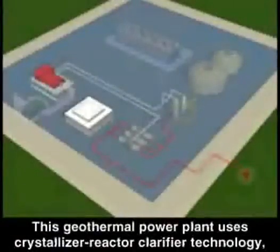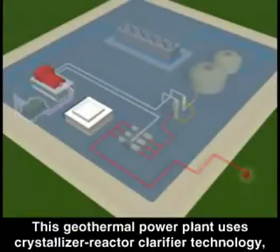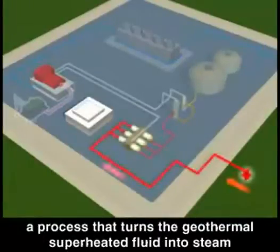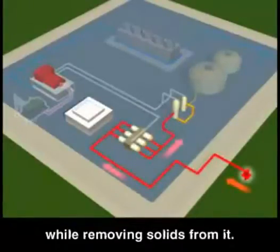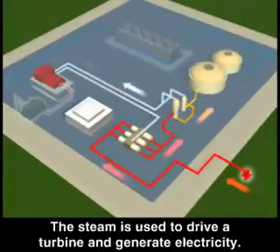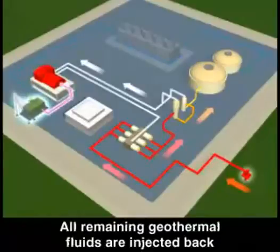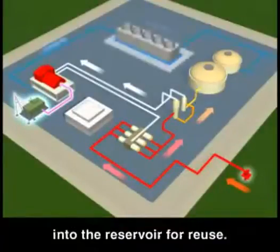This geothermal power plant uses crystallizer reactor clarifier technology, a process that turns the geothermal superheated fluid into steam while removing solids from it. The steam is used to drive a turbine and generate electricity. All remaining geothermal fluids are injected back into the reservoir for reuse.